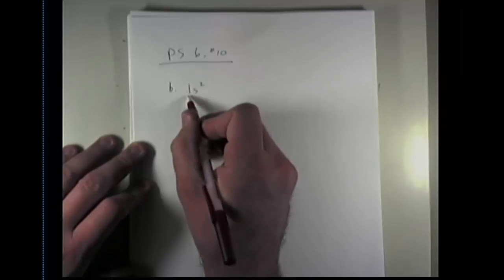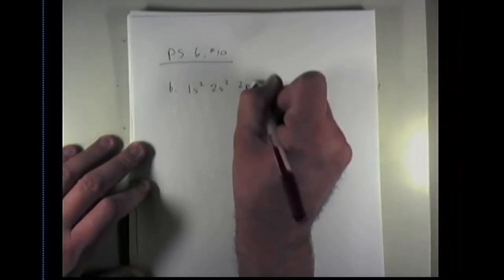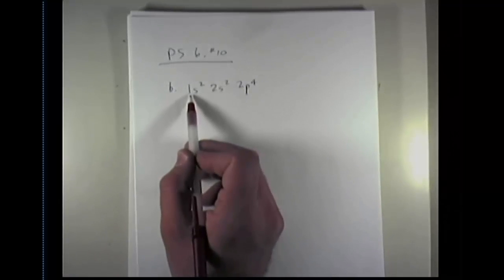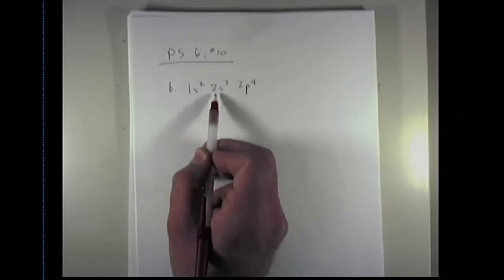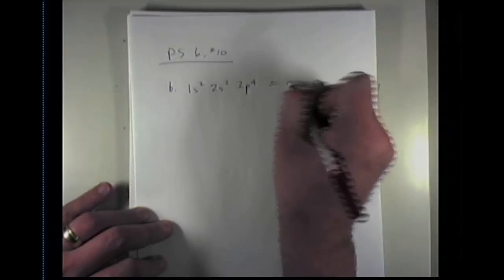Let's begin with letter B. So letter B, we're given the electron configuration 1s2, 2s2, and 2p4. As we look at the periodic table and try and figure out where that is, we'll notice that 1s2 takes us from hydrogen to helium, and then 2s2 goes through lithium and beryllium, and 2p4 takes us four elements in to element number 8, which is oxygen.